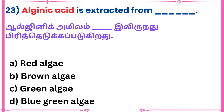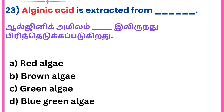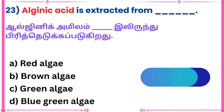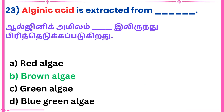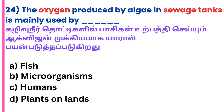23rd question: Alginic acid is extracted from which algae? Answer: Brown algae.